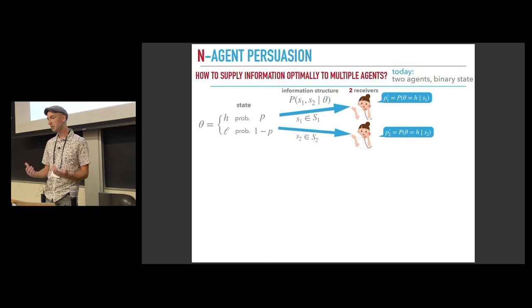The information structure determines the joint distribution of signals, conditional on the state for each of the states. We assume that the receivers know this underlying information structure. So upon receiving their signals, they can perform Bayesian updating.